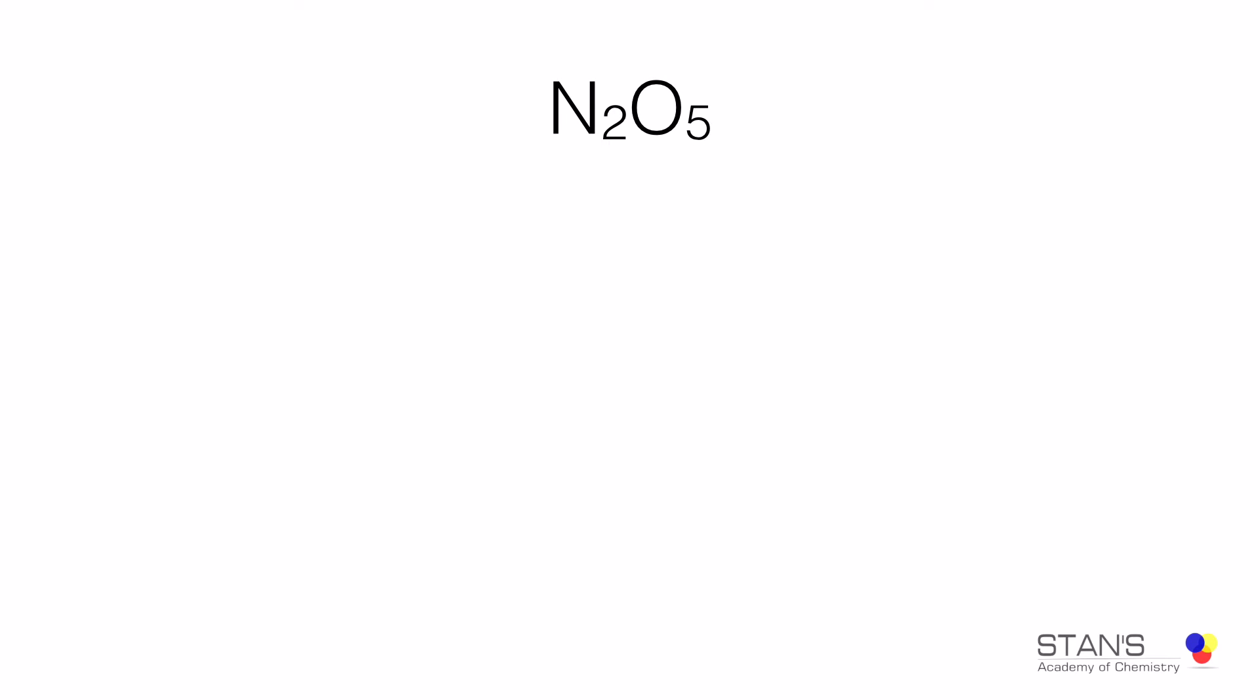Here is another example. The compound contains two nitrogens and five oxygens. Nitrogen is the more electropositive element, therefore the name does not change. There are two nitrogens, therefore we have dinitrogen.